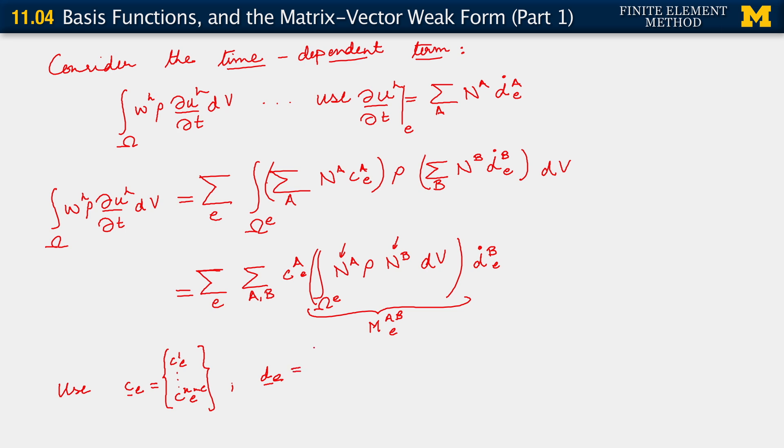D_e we know is just D_1^e up to D number of nodes in the element sub e. Okay? However, we also know that in the particular form that we're dealing with here, we have a D_e dot. Right? Because we get time derivatives of each one of these terms. I'll make this dot a little bigger than the dots of the ellipses.